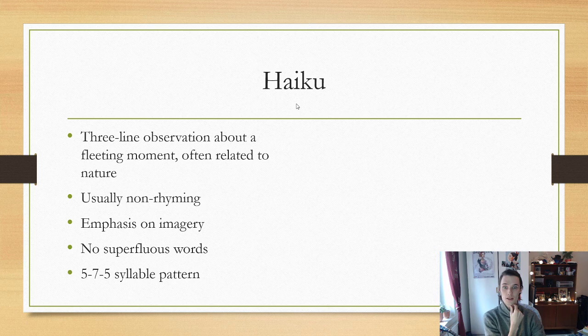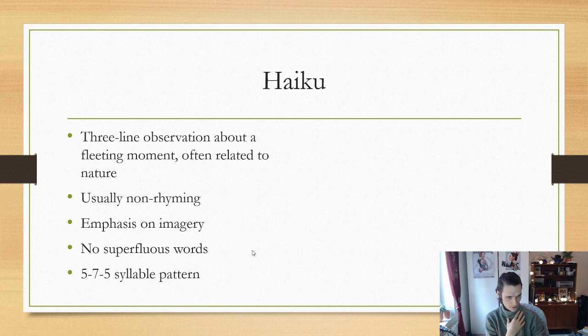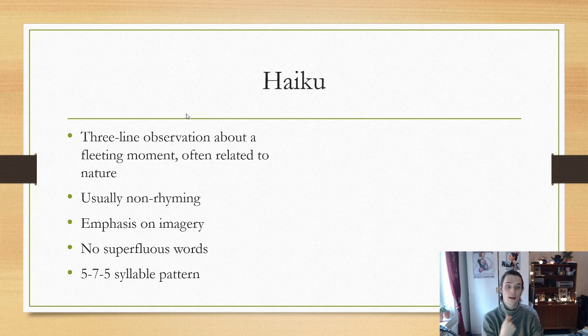So, let's jump straight into the haiku, which is a very famous type of poem. It is usually a three-line observation about a fleeting moment, often related to nature. It is usually non-rhyming, has an emphasis on imagery, no superfluous words, and it follows a five-seven-five syllable pattern. That means the first line should have five syllables, the second should have seven, and the final one should also have five.